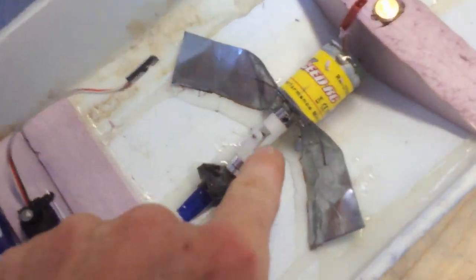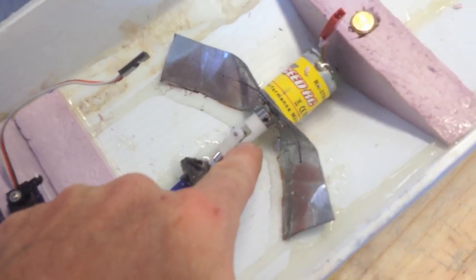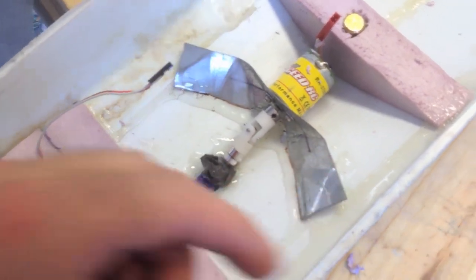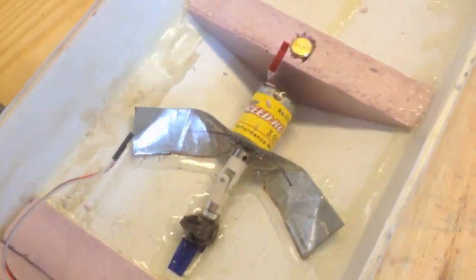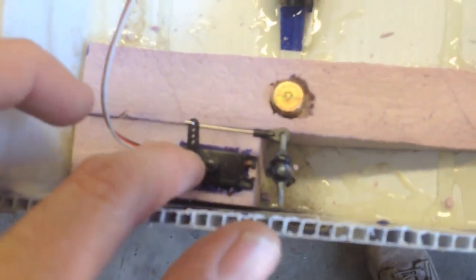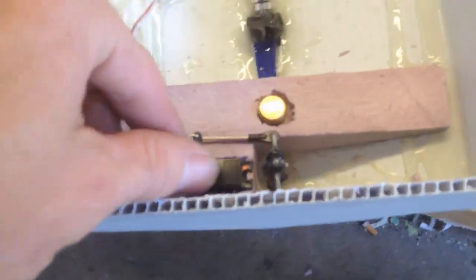Now, this U-joint, I bought that. That was at the hobby store for around $5, I believe. And then here is the servo from the helicopter as well. And that turns the rudder.